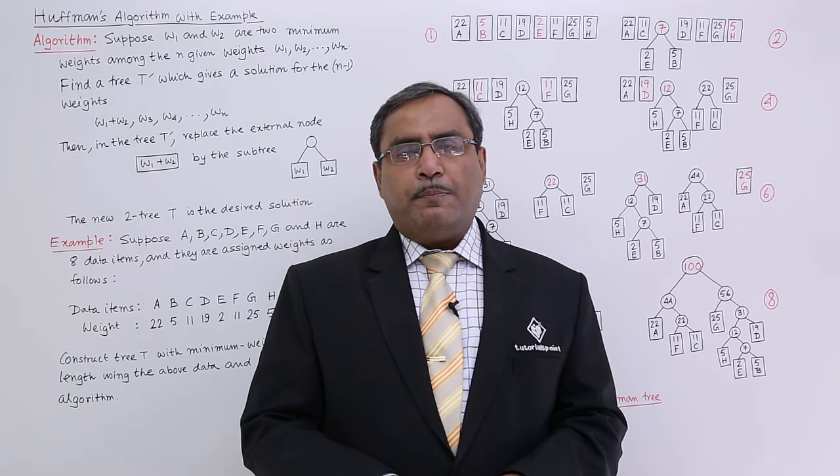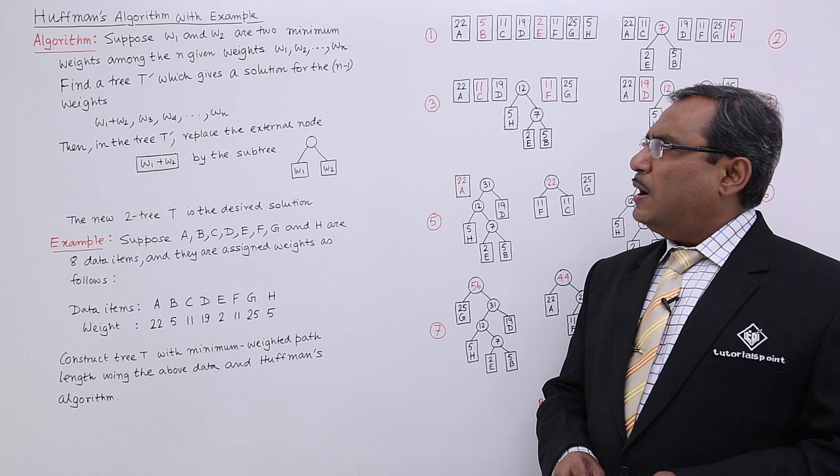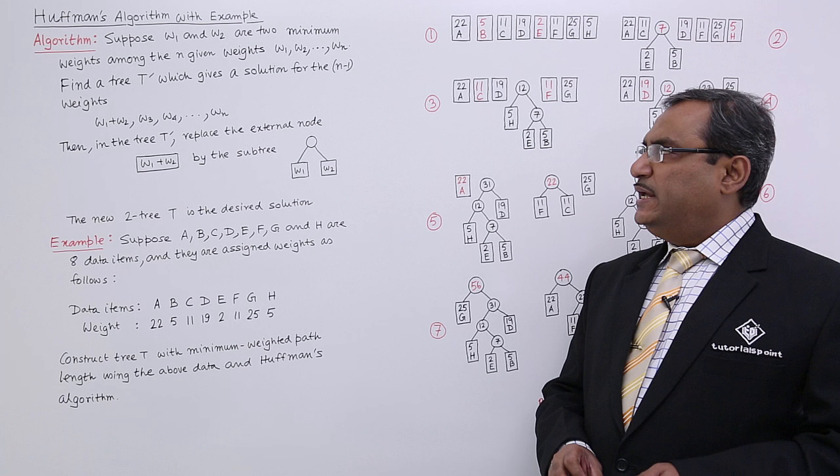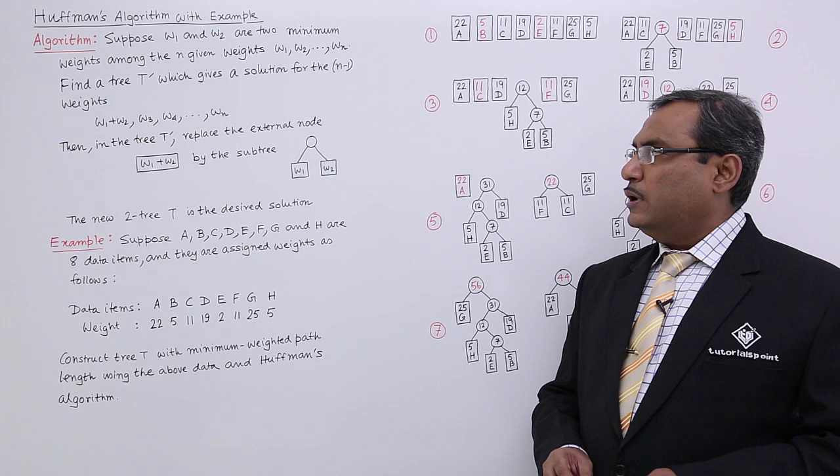Let us discuss Huffman's algorithm and one example in this particular session. Huffman algorithm states that suppose W1 and W2 are the two minimum weights among the n given weights W1, W2, dot dot, up to Wn, find a tree T dash which gives a solution for the n minus 1 weights. That is W1 plus W2 will be one weight and then W3, W4, dot dot dot, up to Wn.